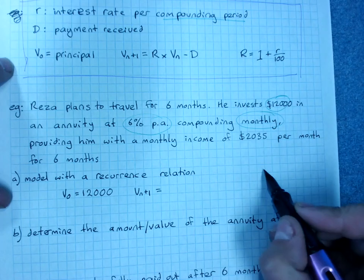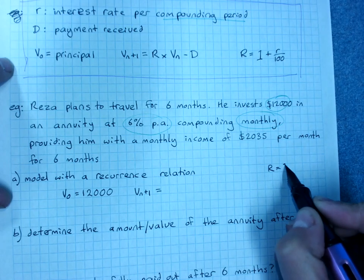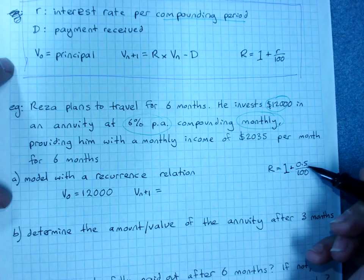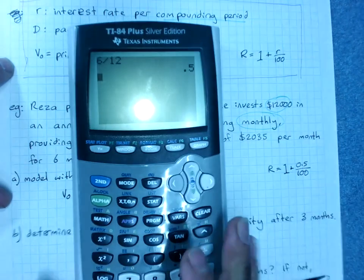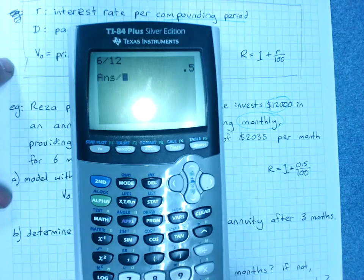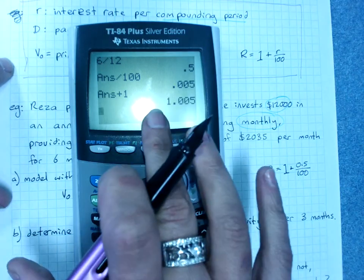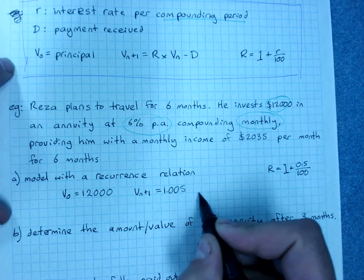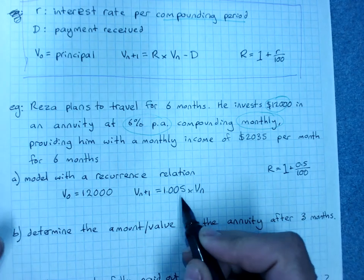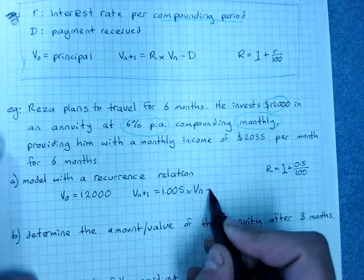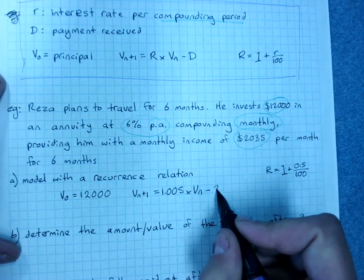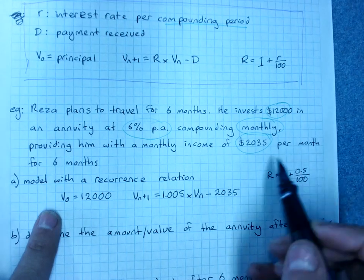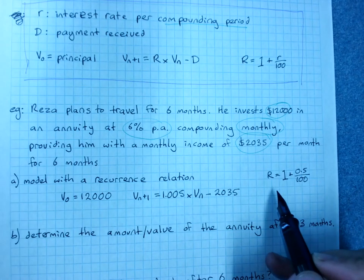But to calculate R, it's 1 plus 0.5 over 100. So that's still my monthly interest rate as a percentage. I need to take that, divide it by 100 and add 1 to get 1.005 as my growth factor. So times Vn minus our repayments of 2035. And that's our recurrence relationship. This bit here. It's a good idea to do your R working somewhere off to the side so you know you did it correctly.